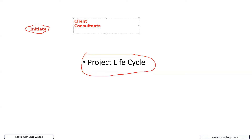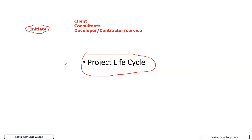The people who are directly working on the project are called contractors, developers, or service companies. When the story starts with the initiate phase, there is only one party: the client. The client is going to hire a consultant, and as per the client's instructions, the consultant is going to conduct certain project report studies. The first thing is a feasibility study — a feasibility report.